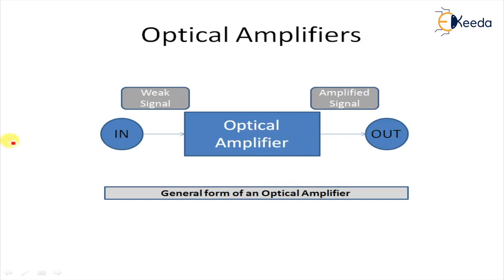The second is an inline amplifier, placed between the transmitter and receiver or between channels. Any optical amplifier used in this way is known as an inline amplifier. The third is a pre-amplifier, used before signal transmission to boost the signal prior to amplification. The pre-amplifier is usually placed at the receiving end of the system so that the transmitted signal is at a level easily detected by the receiver.